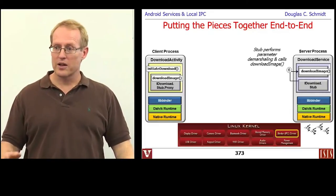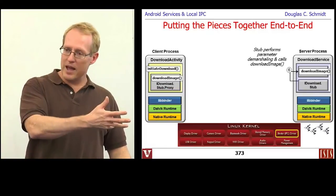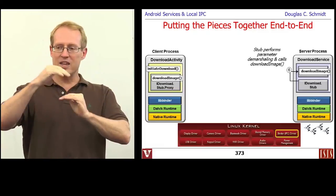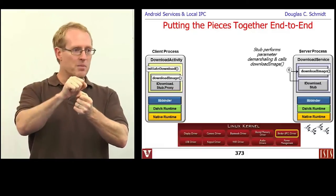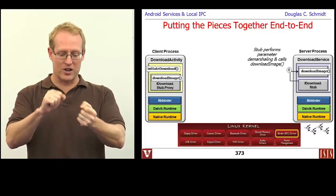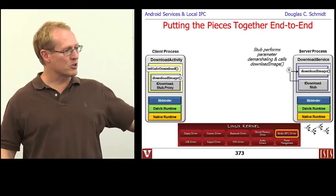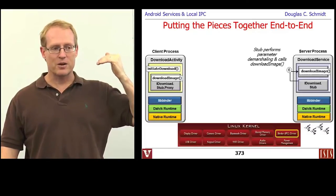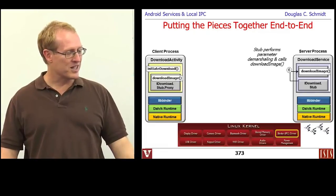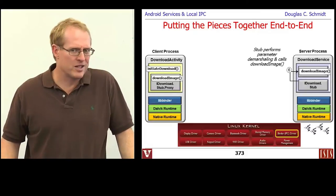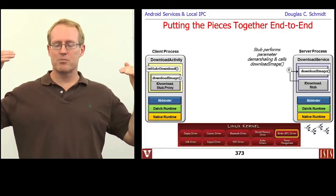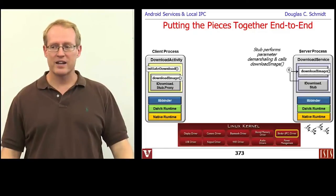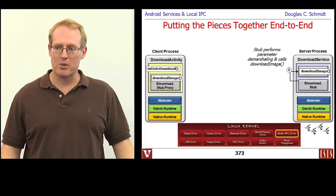The onTransact hook demarshals the parameter and invokes the upcall — it's called an upcall — to the downloadImage method on our particular service. On the way back out of that method callback, the result is taken: when downloadImage returns a string, the generated stub stuffs it back into the parcel that came with the original onTransact call, and then unwinds the whole thing going backwards. Everybody unblocks and we end up back at the original call site with the result as a return value from the downloadImage invocation on the proxy. The proxy blocks — it looks just like a regular two-way method call — but the processing was done by a different method in a different process, which is what's commonly known as remote procedure call.